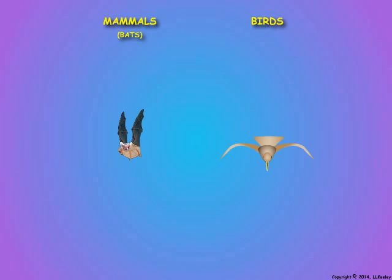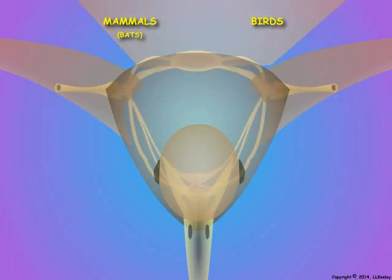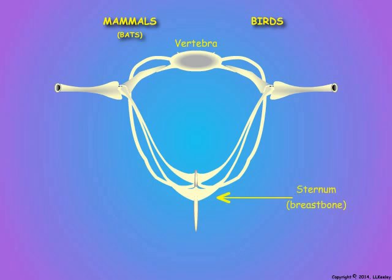The wings of both birds and bats are modified forelimbs, and the muscles that power flight in birds and bats are attached directly to the wings, directly powering the upstroke and downstroke during flight. We will start with birds, as they are the simplest. Here is a cross-section through the thorax of a bird at the level of the wings.